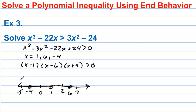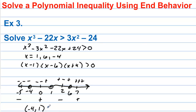Testing negative 5: negative, negative, and negative — that's going to be negative overall. Testing 0: negative, negative, and positive — that's going to be positive. Testing 2: positive, negative, and positive — that would be negative. And for 7, everybody is going to be positive. We want the positive values, so we want from negative 4 to 1, union with 6 to infinity. We're not including the values that make this 0 because we don't have the equal part.